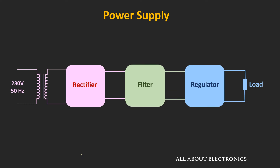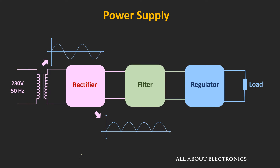If we see the typical block diagram of any linear power supply, it consists of the transformer, the rectifier, the filter, and the regulator. The input voltage is scaled down using the step-down transformer, then converted into pulsating DC using the rectifier circuit. The variation in this pulsating DC is filtered out using the filter circuit, but the output still contains some finite amount of ripple. So the filtered output is then given to the regulator, whose job is to remove these variations and provide a constant output.